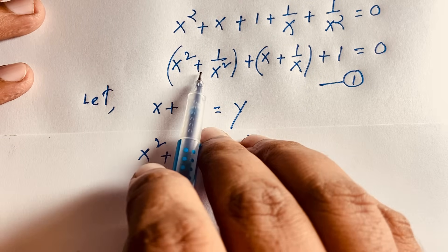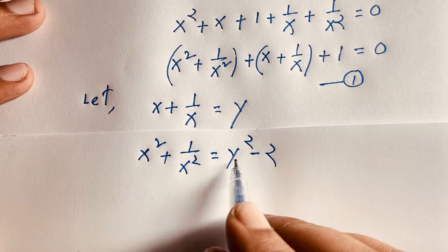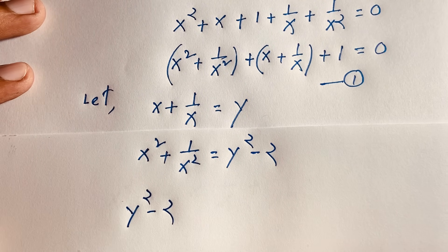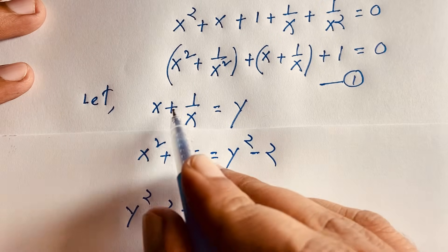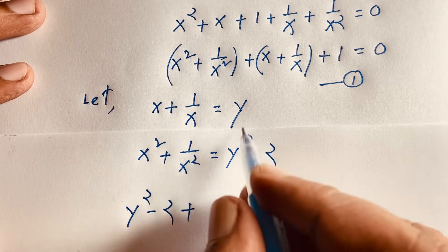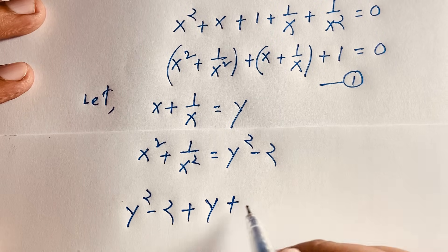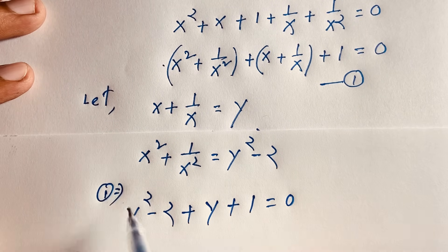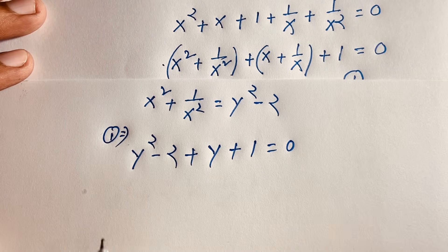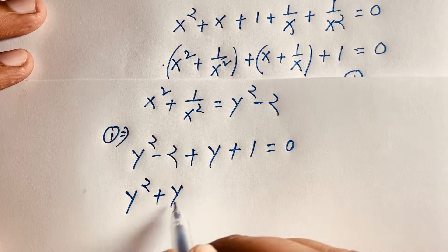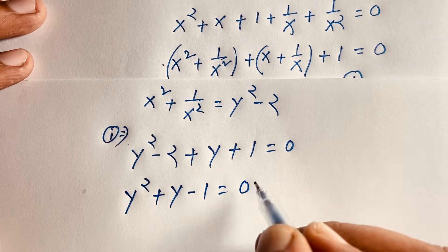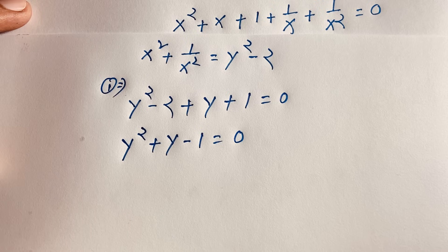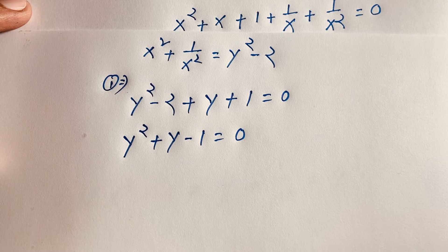Substituting into our equation: x squared plus 1 over x squared becomes y squared minus 2, and x plus 1 over x becomes y. So we get y squared minus 2 plus y plus 1 equals 0, which simplifies to the quadratic equation y squared plus y minus 1 equals 0.